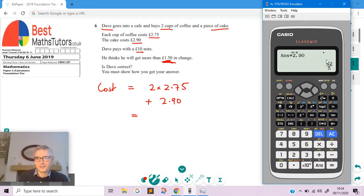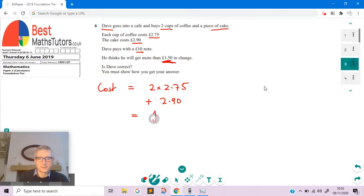It gives it as a fraction. If we want it as a decimal, we press the SD button. That gives us 5.5, which would be £5.50. I'm now going to add on £2.90 onto that, plus 2.90. Again, we have to be careful, it gives it as a fraction. We want it as a decimal, so press the SD button. We've got 8.4, which is £8.40.